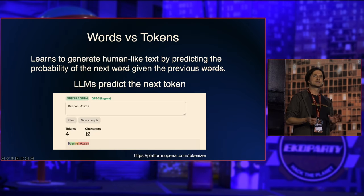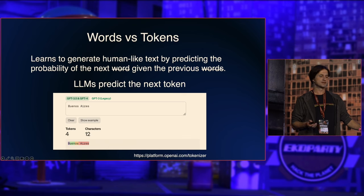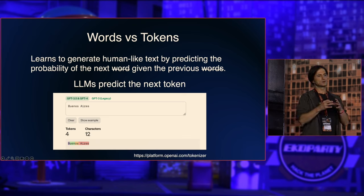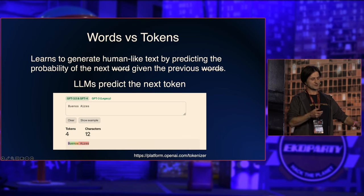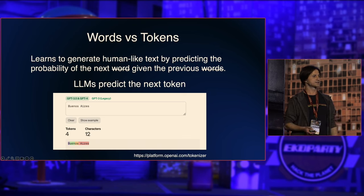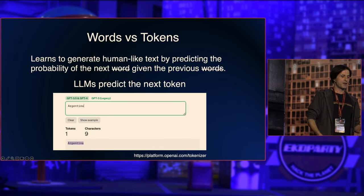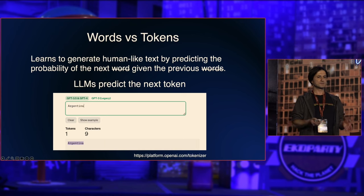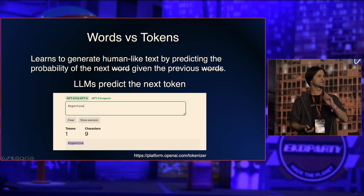There's one nuance to add: a large language model doesn't actually predict the next word — it predicts the next token. It's not trained on words themselves but splits words down into tokens. For example, the city Buenos Aires is 12 characters but only four tokens. The word Argentina has just one token, so it's represented by a single token in the model.